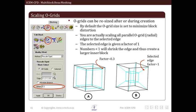A selected edge is given a factor of 1. A factor less than 1 will shrink the edge and thus create a larger inner block as shown in figure A. Similarly, a factor greater than 1 will expand edge and will create smaller inner block as shown in figure B.